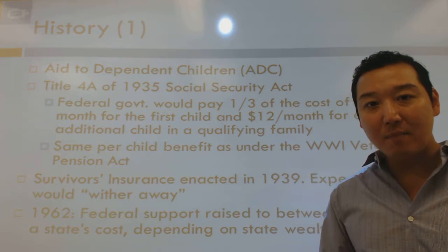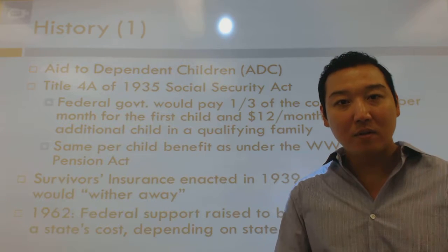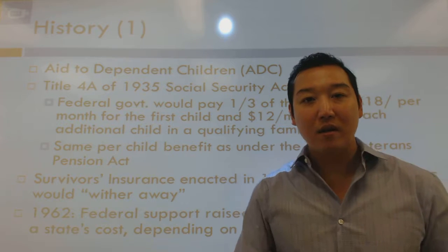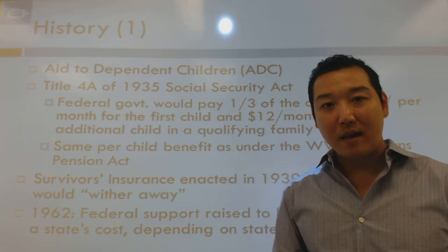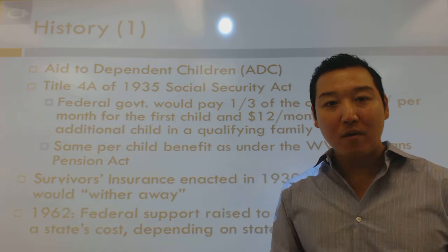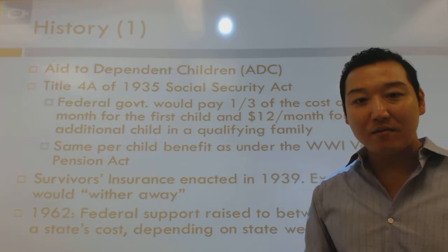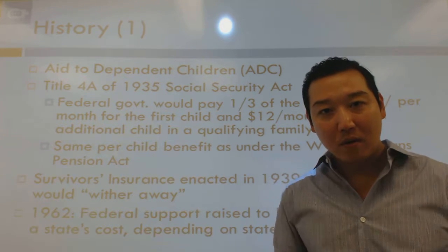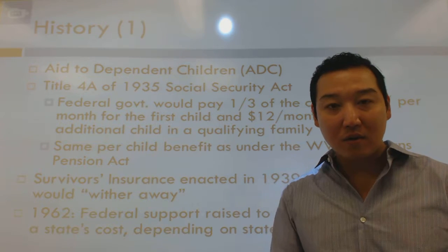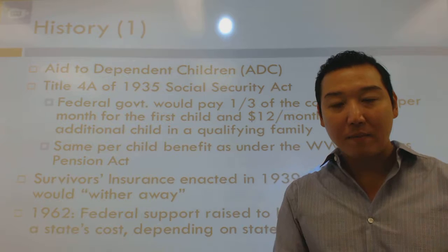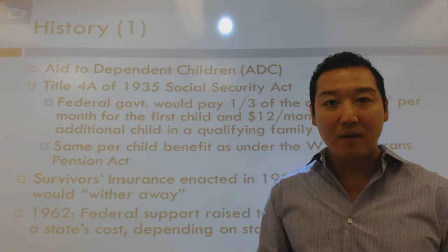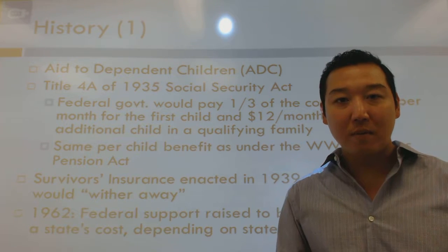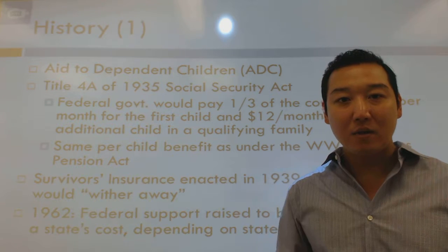Aid to Dependent Children reflected the philosophy of providing assistance to the kids themselves. Recall that when we talked about Social Security, we added the survivor's component in 1939 with the thought that we wouldn't need to administer assistance to the poor through a public assistance mechanism — we could do it through an insurance mechanism. If something happens to the main breadwinner, there'd be an insurance program in place. When we implemented that survivor's component, it was thought that ADC would simply wither away.